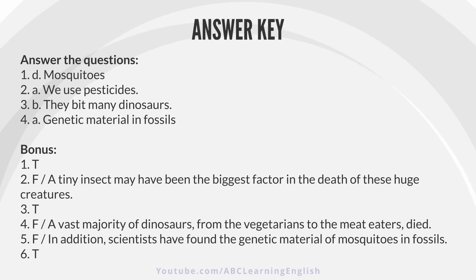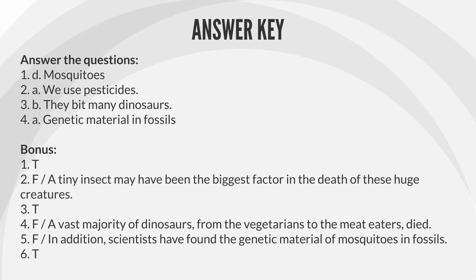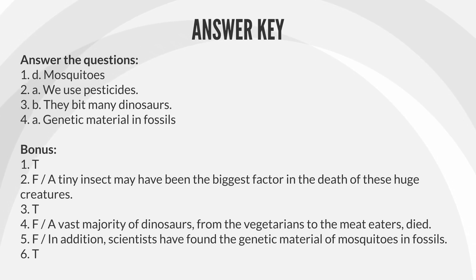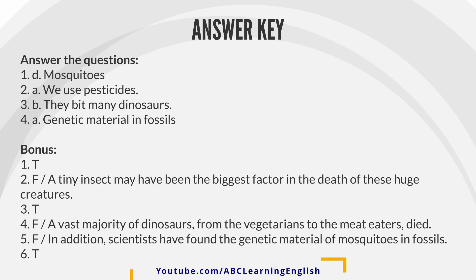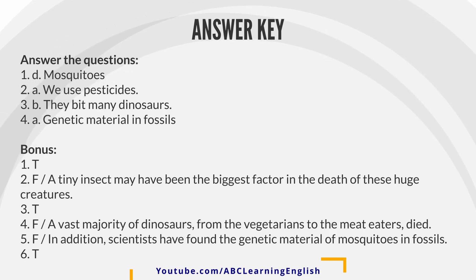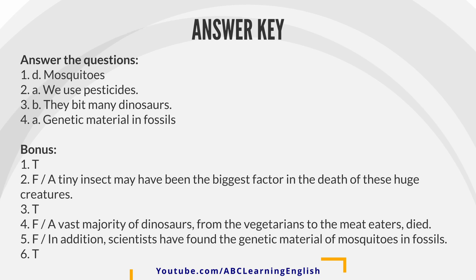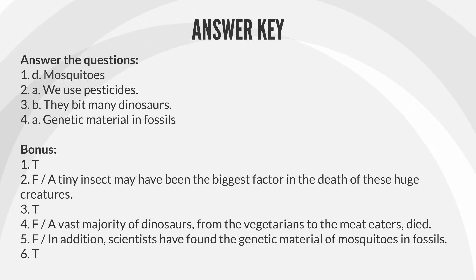Answer key. 1. D. Mosquitoes. 2. A. We use pesticides. 3. B. They bit many dinosaurs. 4. A. Genetic material in fossils. Bonus: 1. T. 2. F. A tiny insect may have been the biggest factor in the death of these huge creatures. 3. T. 4. F. A vast majority of dinosaurs, from the vegetarians to the meat-eaters, died. 5. F. Scientists have found the genetic material of mosquitoes in fossils. 6. T.